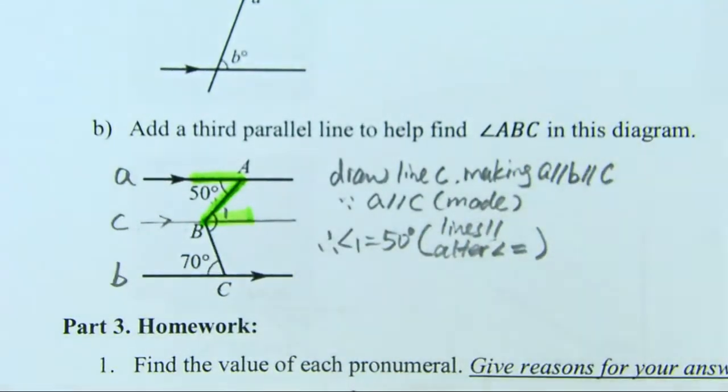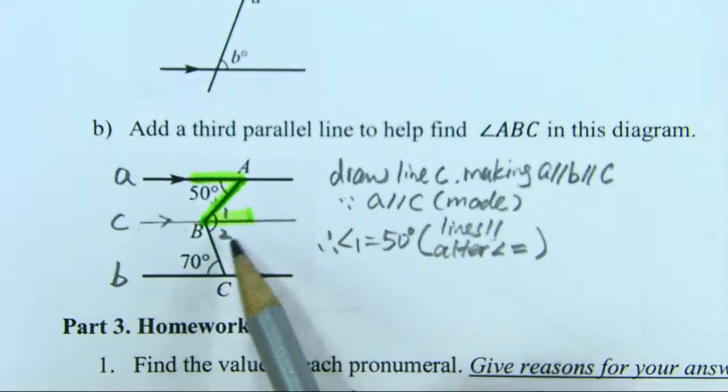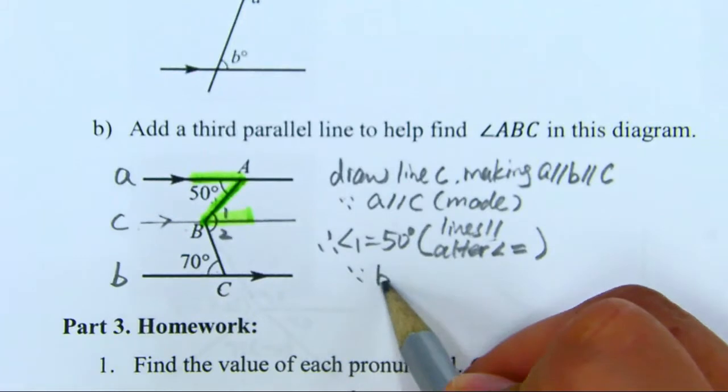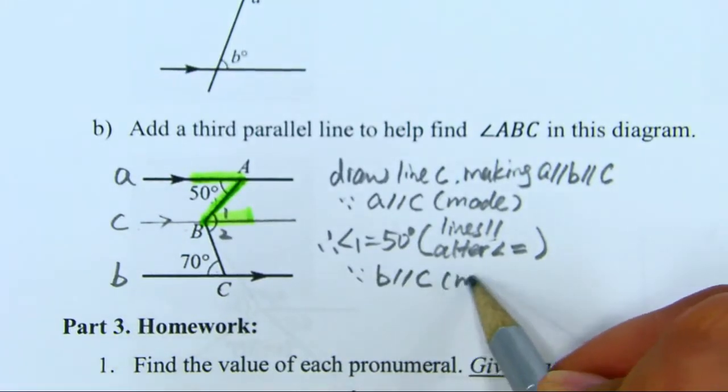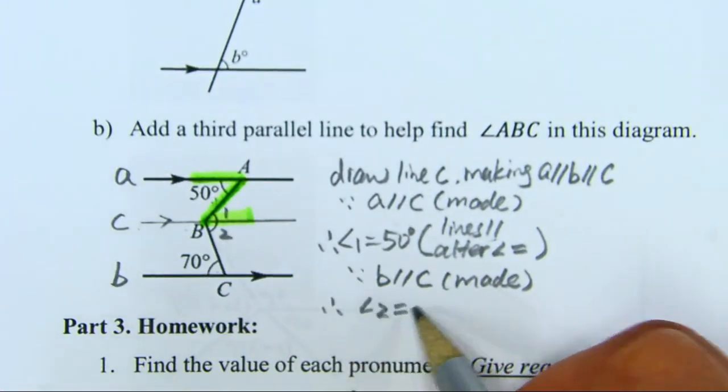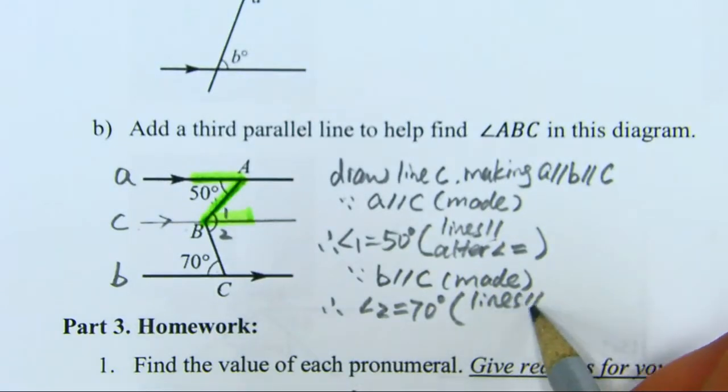Therefore angle 1 equals 50 degrees. If I know angle 1, angle 2 will be easier, because angle 2 and 70 are still alternate angles. We write: because B is parallel to C, you made them parallel, therefore angle 2 equals 70 degrees. The same reason: lines are parallel, alternate angles are equal.